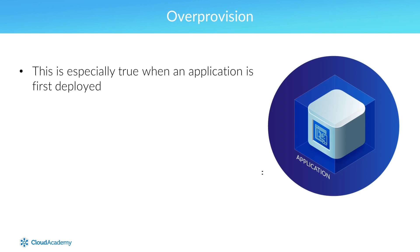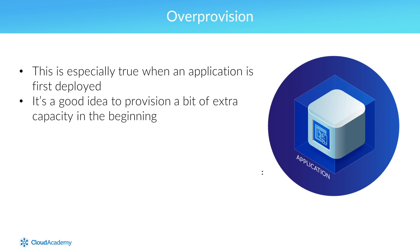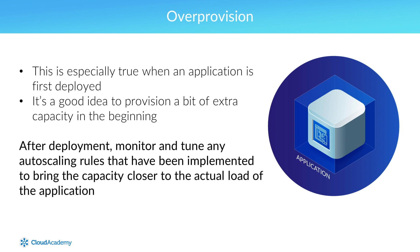It's often going to be difficult to completely understand the relationship between metrics and capacity requirements, especially when an application is first deployed. As such, it makes sense to provision a bit of extra capacity in the beginning. After deployment, monitor and tune any autoscaling rules that have been implemented in order to bring the capacity closer to the actual load of the application.